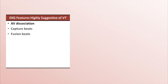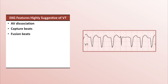Next on the list are capture and fusion beats. These are unexpectedly narrow and normal-looking beats or near-normal-looking beats within the middle of a run of regularly occurring wide complexes. This is due to a supraventricular impulse passing through the AV node and reaching the ventricles just before they would otherwise be depolarized by the surrounding ventricular tachycardia. When the QRS complex is completely normal, it's called a capture beat. When it's a hybrid of QRSs from a ventricular and a supraventricular origin — because the supraventricular impulse reaches the ventricles at the same time as they are being depolarized from the VT — that's called a fusion beat.